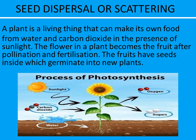Good morning. We all know that a seed is a tiny part of a plant which gives rise to a new plant. A plant produces many seeds but not all grow into new plants. A plant makes its own food from water and carbon dioxide in the presence of sunlight. The flower in a plant becomes the fruit after pollination and fertilization, and the fruits have seeds inside which germinate into new plants.